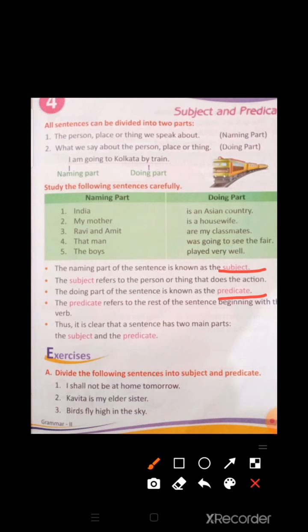The predicate refers to the rest of the sentence beginning with the verb. The predicate part refers to the remaining sentence and it starts with a verb. Here, we can see 'is,' 'are,' 'was,' and 'played' are verbs. The doing part starts from the verb.